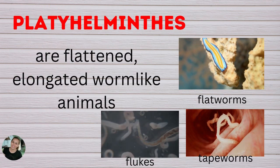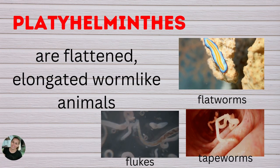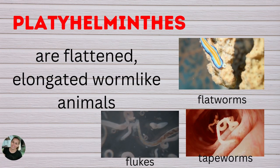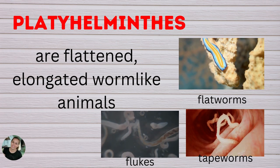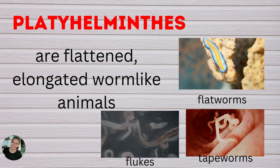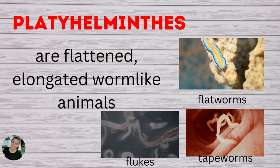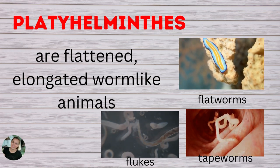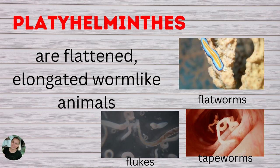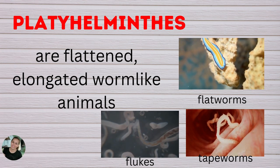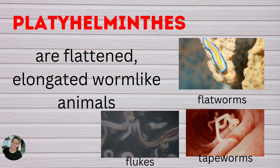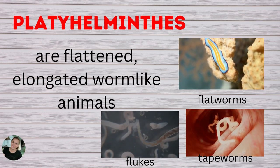The next group of invertebrates are platyhelminthes. They are flattened, elongated worm-like animals. Examples are flatworms, tapeworms, and flukes.